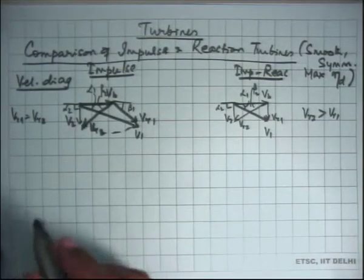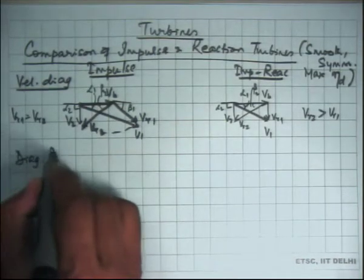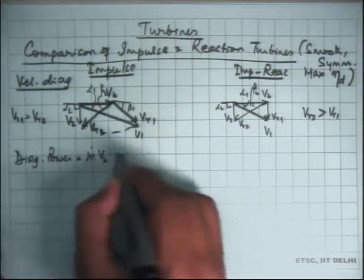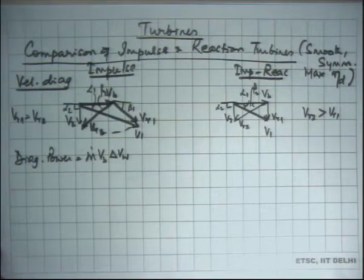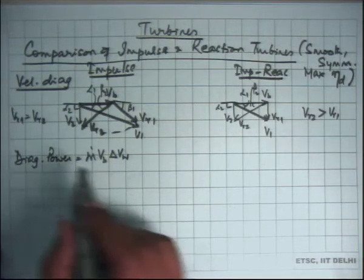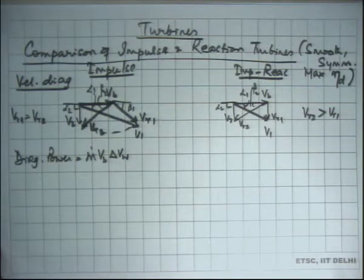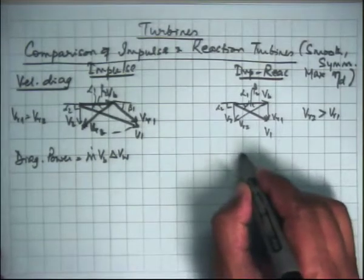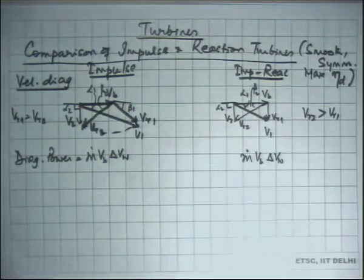The diagram power is m-dot times VB times delta-Vw. Vw is the rate of change of momentum of the fluid and VB is the velocity of the vane, so m-dot times VB times delta-Vw is the diagram power. This expression is the same for both the impulse and reaction turbines — there is no difference.